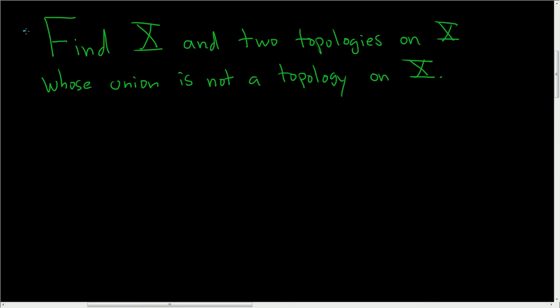Find x and two topologies on x whose union is not a topology on x. Let's go ahead and work this out solution.